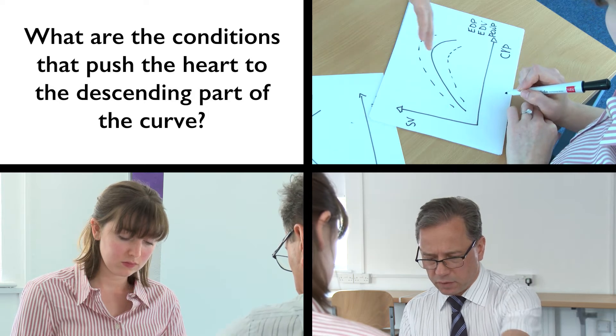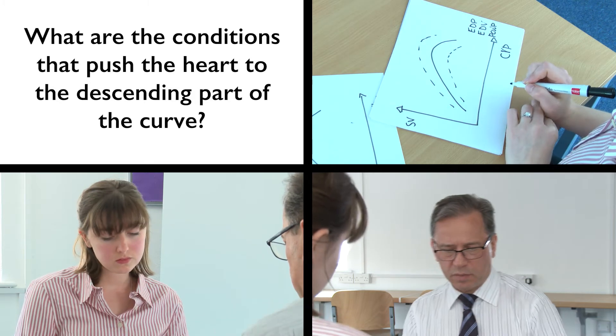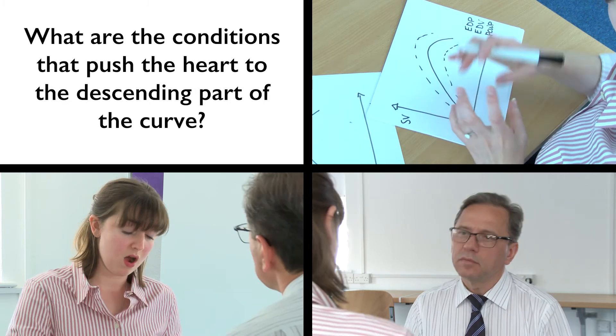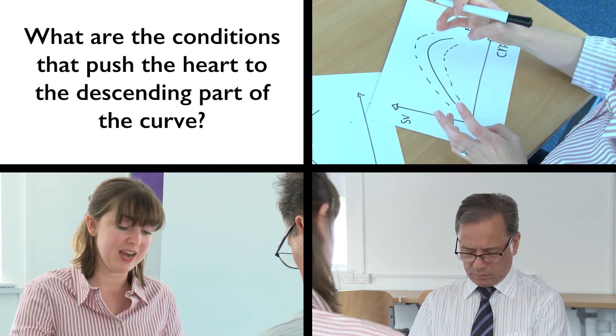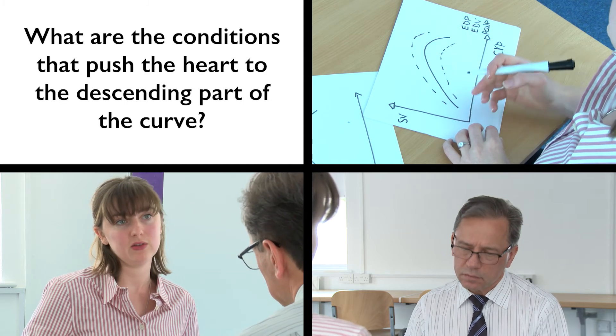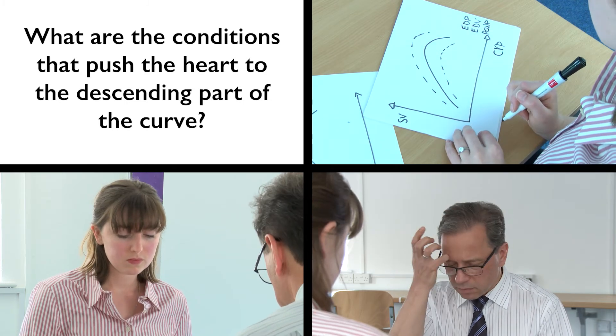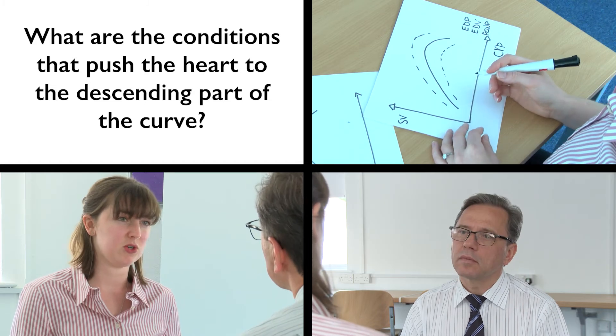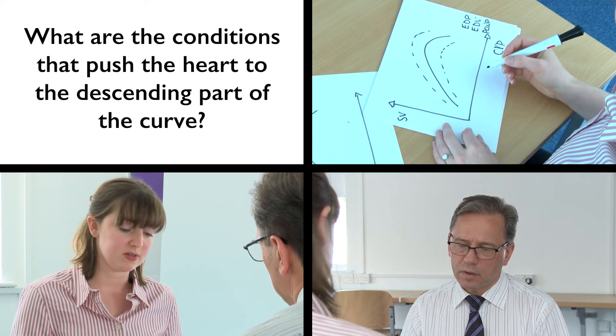What are the conditions that will push this curve, that will shift it to the descending part? So this is seen when the heart muscle, the heart ventricle becomes enlarged, as is typically seen with dilated heart failure. You could also see it with poor environment for the heart muscle, such as hypoxia or acidosis.